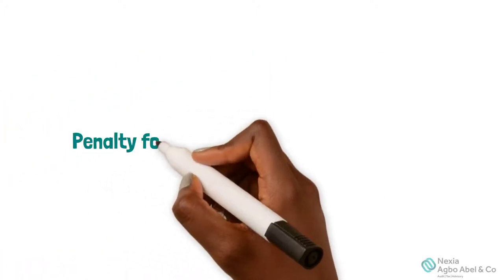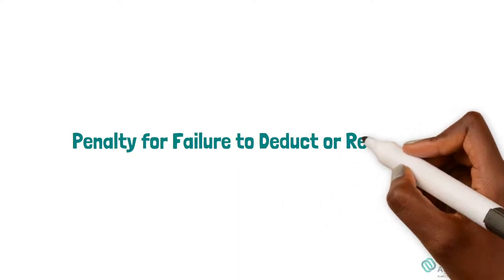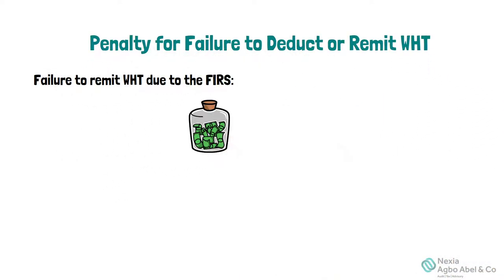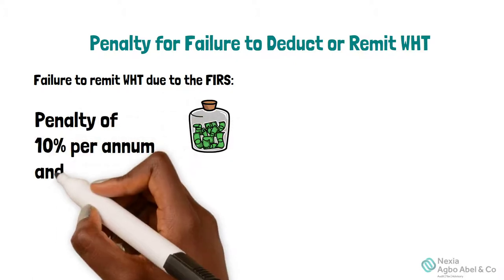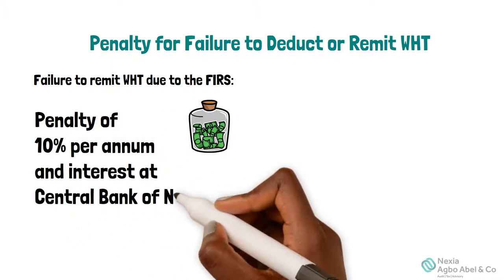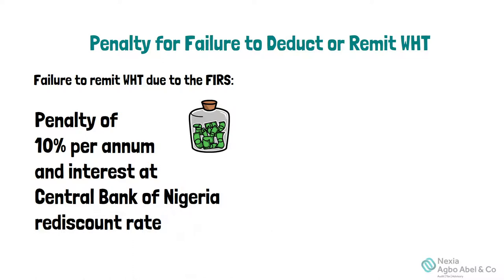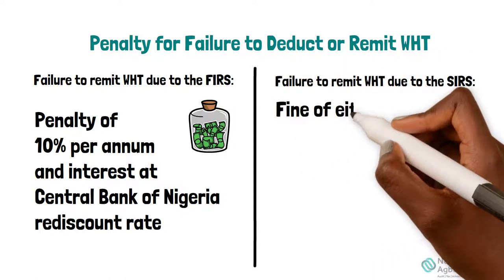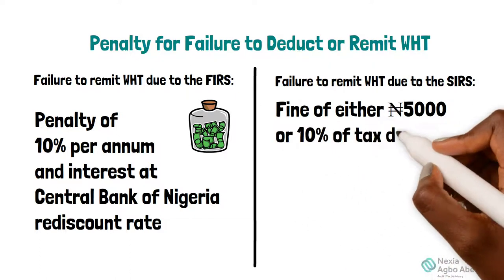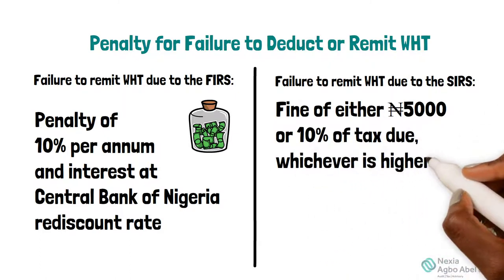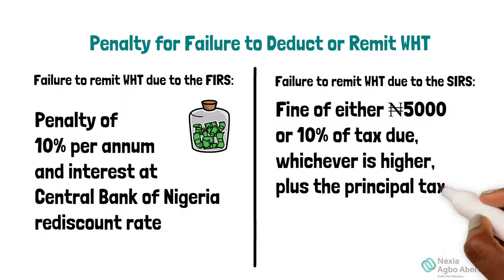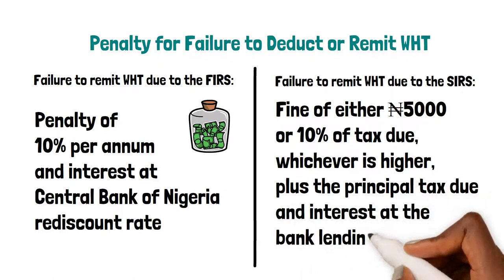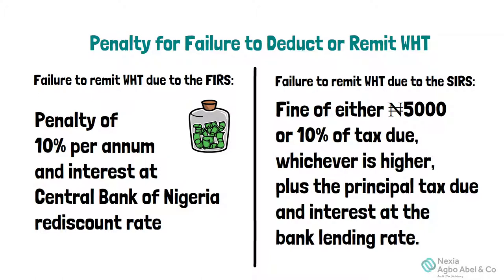Penalty for Failure to Deduct or Remit Withholding Tax. Failure to remit Withholding Tax due to the FIRS will attract a penalty of 10% per annum and interest at the Central Bank of Nigeria rediscount rates. Furthermore, failure to remit Withholding Tax will attract a fine of either 5,000 naira or 10% of tax due, whichever is higher, in addition to the principal tax due and interest at the bank lending rates.